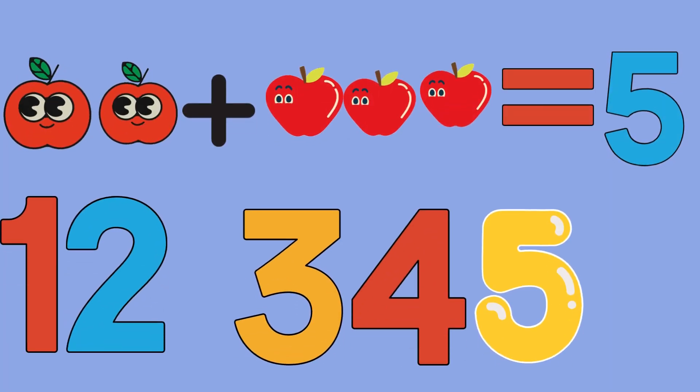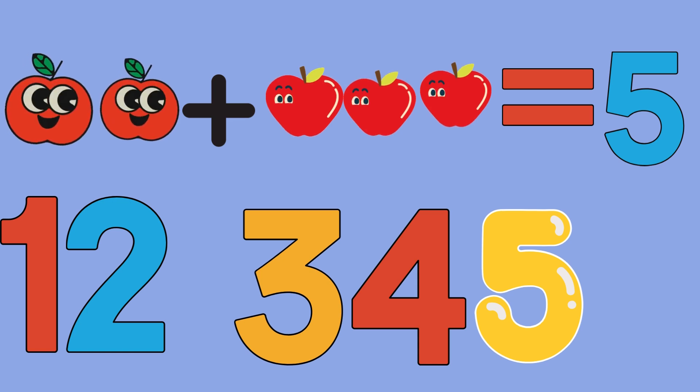Two apples plus three apples equals five apples. One, two, three, four, five. The plus sign is our magic symbol that means put together or add. Let's try another one.